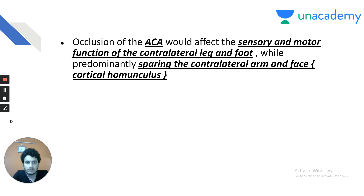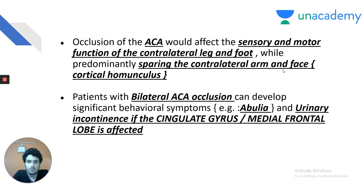Occlusion of the anterior cerebral artery affects sensory and motor function of the contralateral leg and foot, predominantly sparing the contralateral arm and face — because the arm and face area is supplied by the middle cerebral artery. ACA and MCA infarct are commonly used clinical terms. Patients with bilateral ACA occlusion develop significant behavioral symptoms due to decreased blood supply to the frontal lobe — for example, abulia and urinary incontinence.